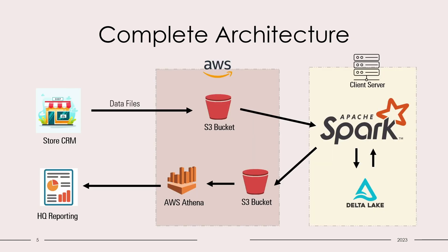This is the complete architecture of the solution that we are going to design. Consider a store CRM dumping their data files in the AWS S3 bucket. The Apache Spark cluster with the power of Delta Lake is hosted on the client server. We'll use the processing power of Apache Spark to read the data from S3 buckets in AWS and write the processed data back to S3. We'll also generate symlink manifest files in order to help Athena read the data from the target S3 buckets.